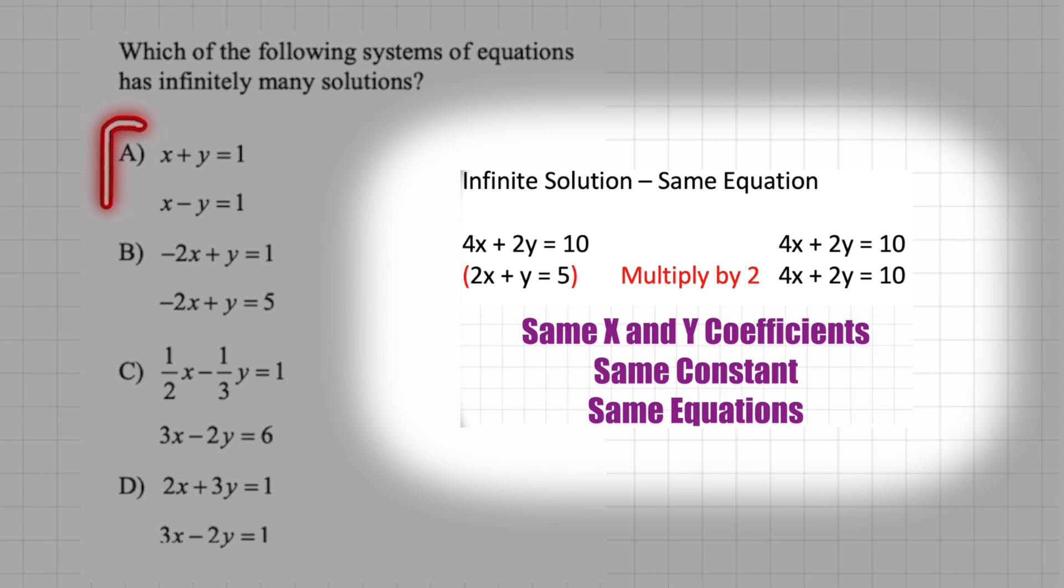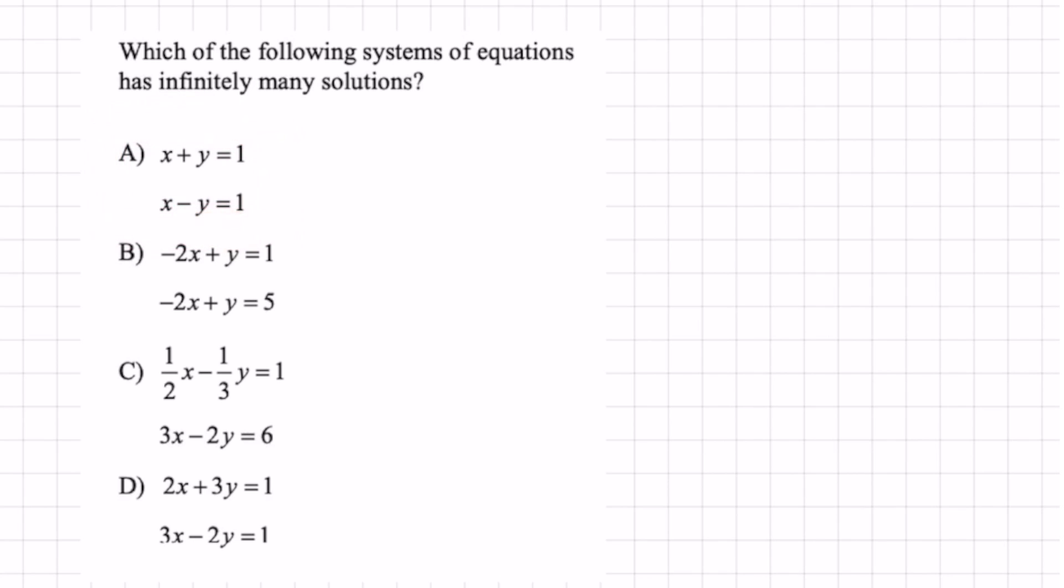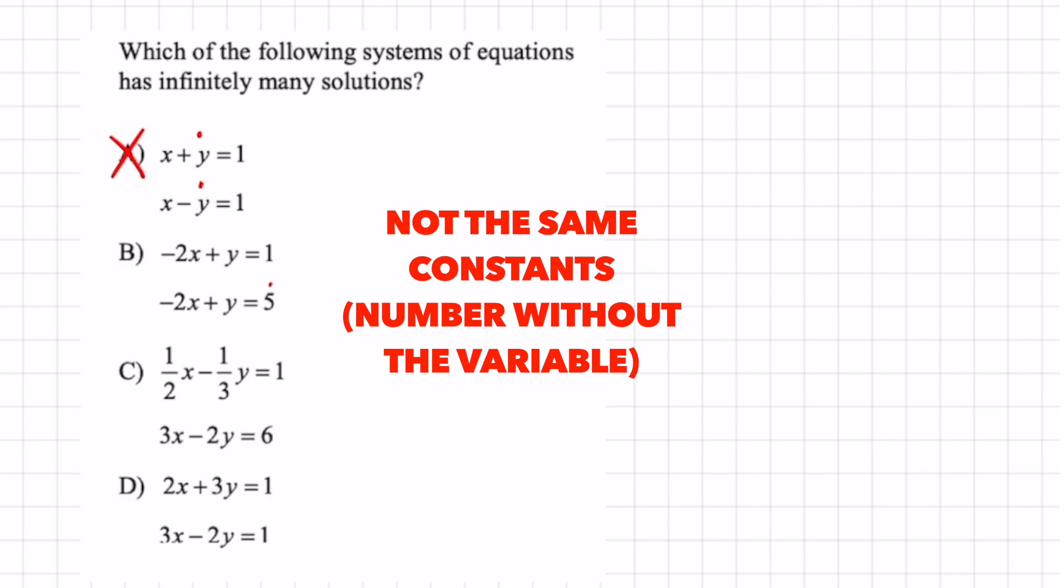So look at A. I mean you can tell that that's not going to be infinitely many because this and this is positive and negative. They gotta be the same so we can cross off A. B, the constants are different, so that could be crossed off.